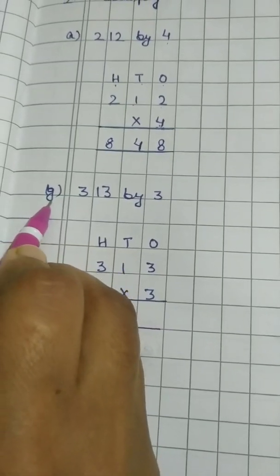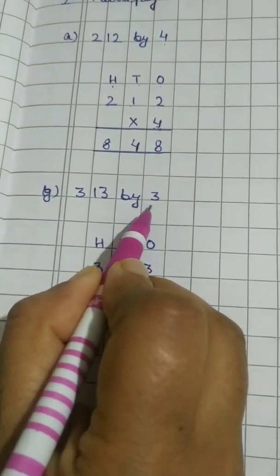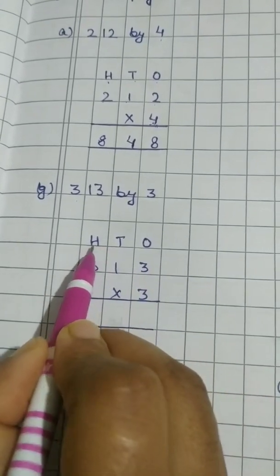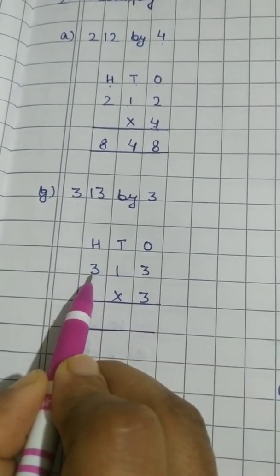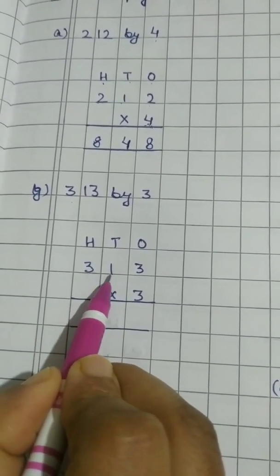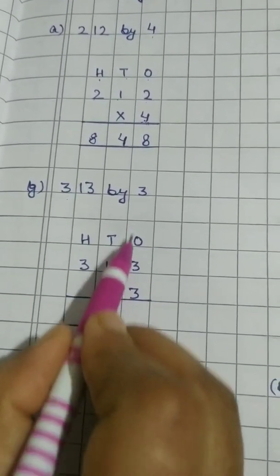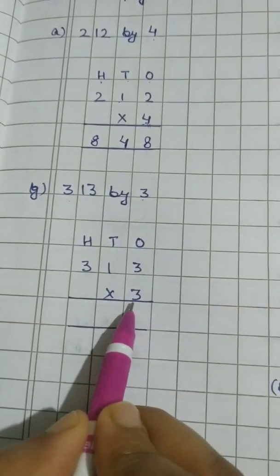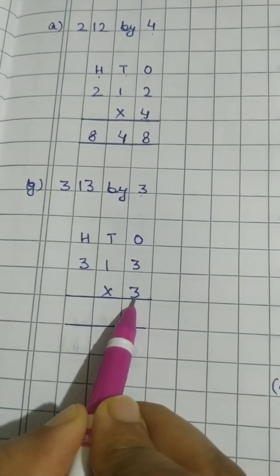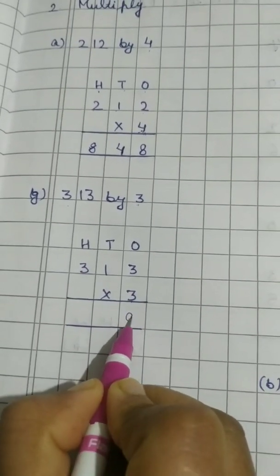Now G part I have done. 313 by 3. First of all arrange it. 1's, 10's, 100's. Then accordingly you have to write in the place value. 3 then 1 then 3. Table of 3 we have to take. Write it like this in the 1's column. Now 3 1's are 3. 3 2's are 6. 3 3's are 9.